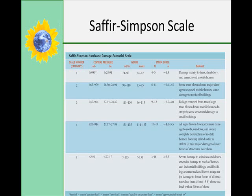Just like the Fujita scale for tornadoes, there is a scale for hurricanes called the Saffir-Simpson scale — though nobody ever calls it that. When they say a category one or category four hurricane, they're referring to the Saffir-Simpson scale. It's set up similar to the Fujita scale, so again it's a logarithmic or exponential scale with multiples of 10. It's based on potential damage caused by particular hurricane conditions, but is also based primarily on wind speed.